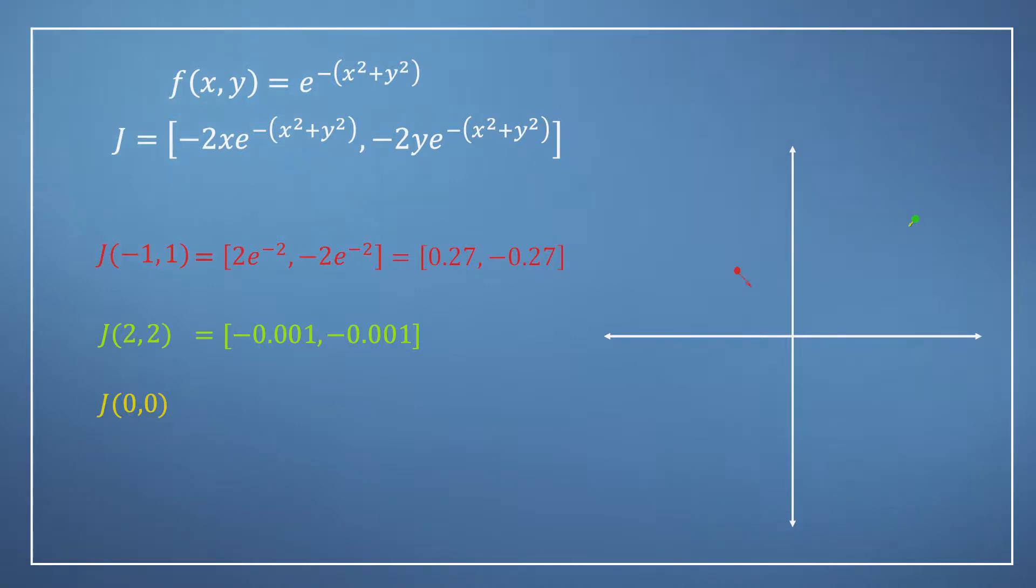Lastly before I reveal the whole vector field let's look at what's going on at the origin itself. Substituting the point returns the zero vector suggesting that the function is flat at this point which must mean one of three things: either this point is a maximum, minimum or something called a saddle which we'll cover later in this module.